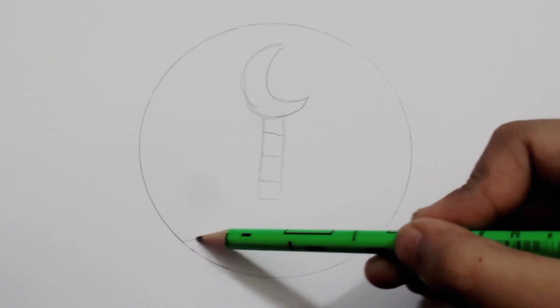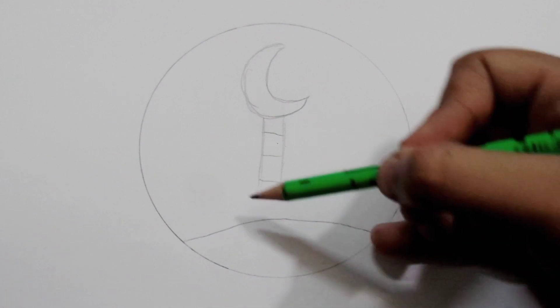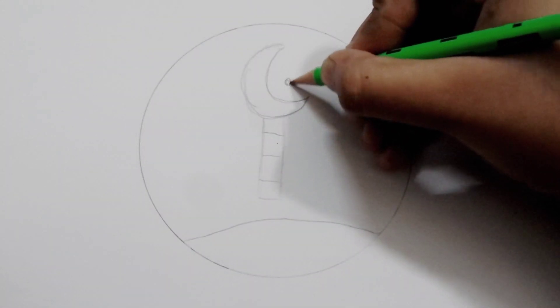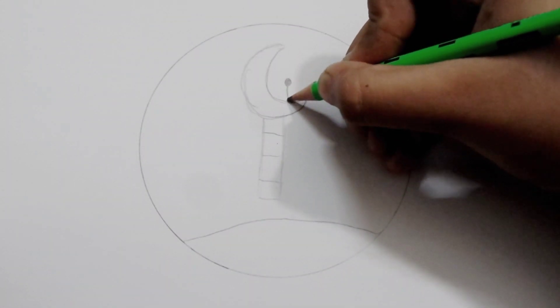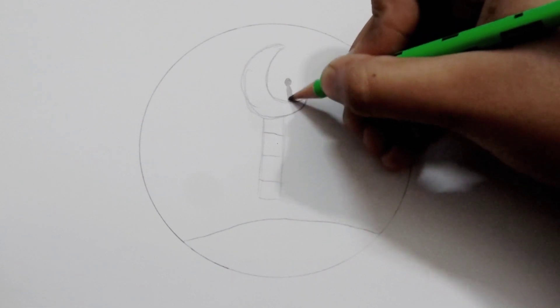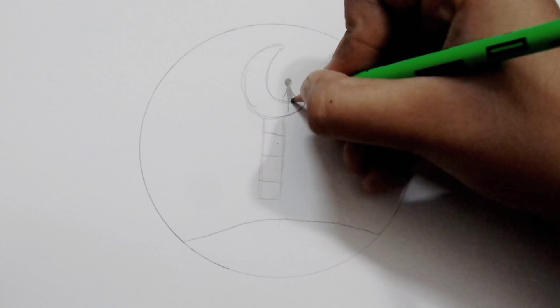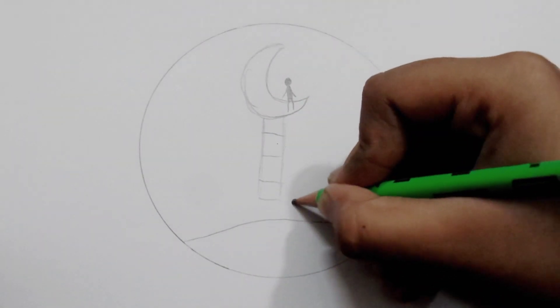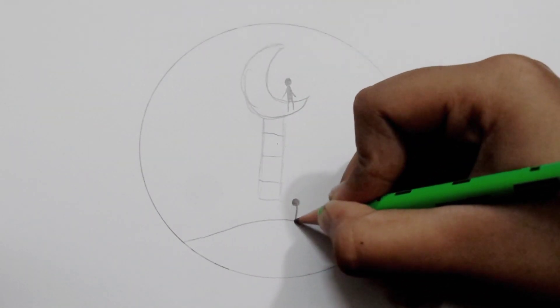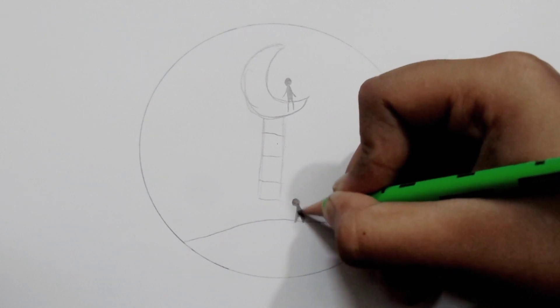So we will draw a ladder and a little bit of the earth, and also a person sitting on the moon and another person trying to climb the ladder.